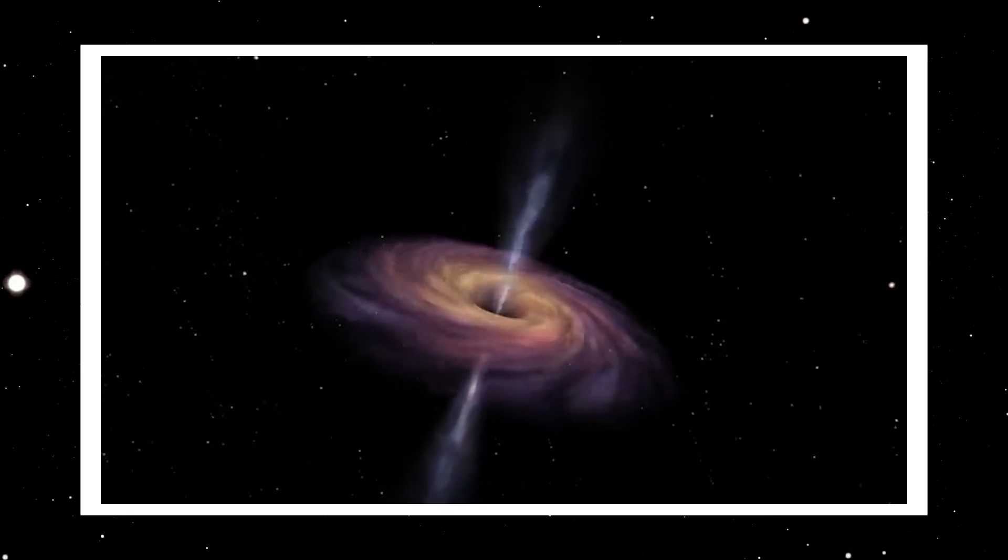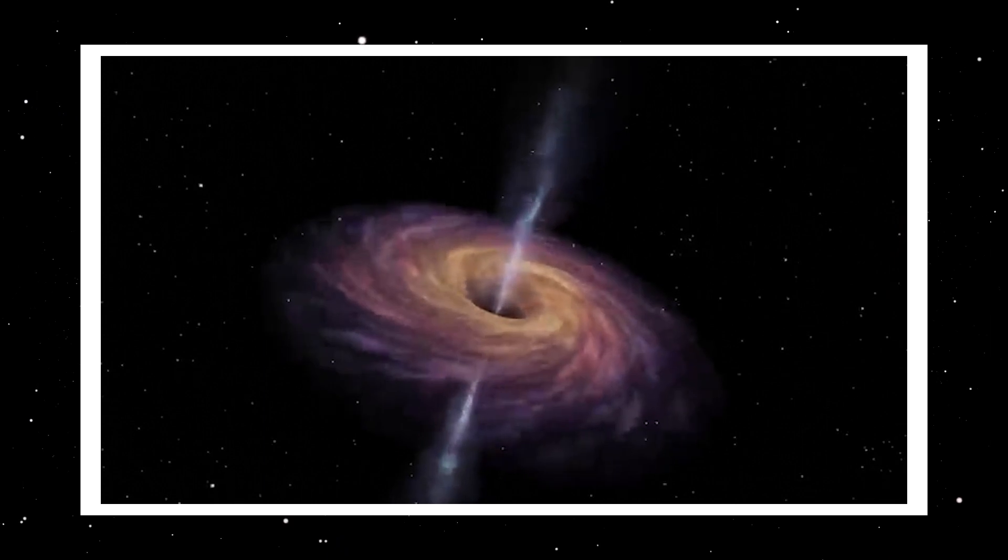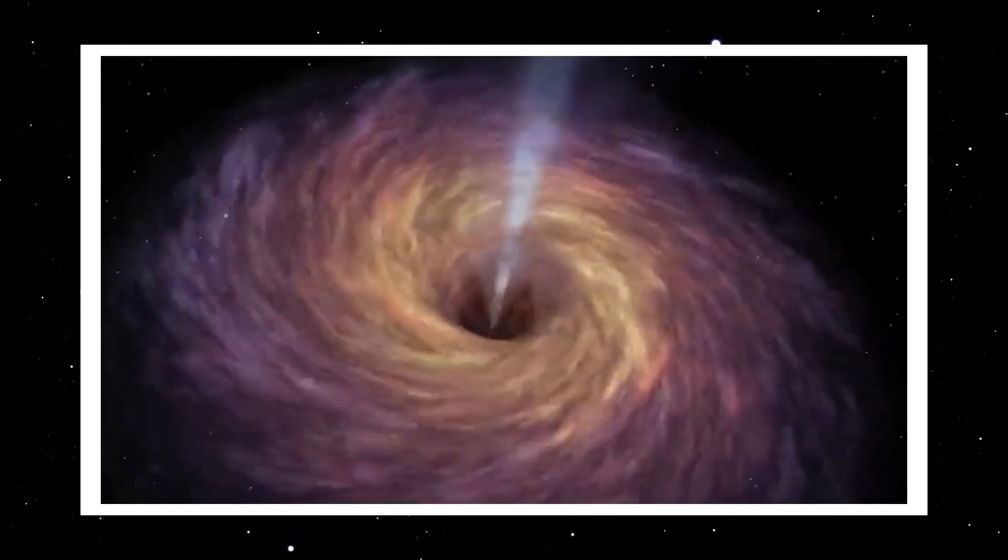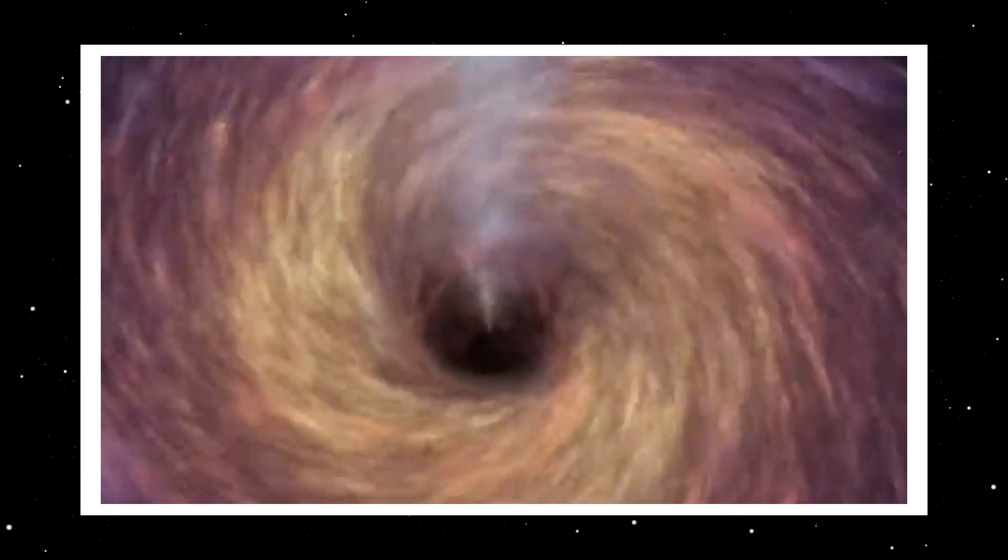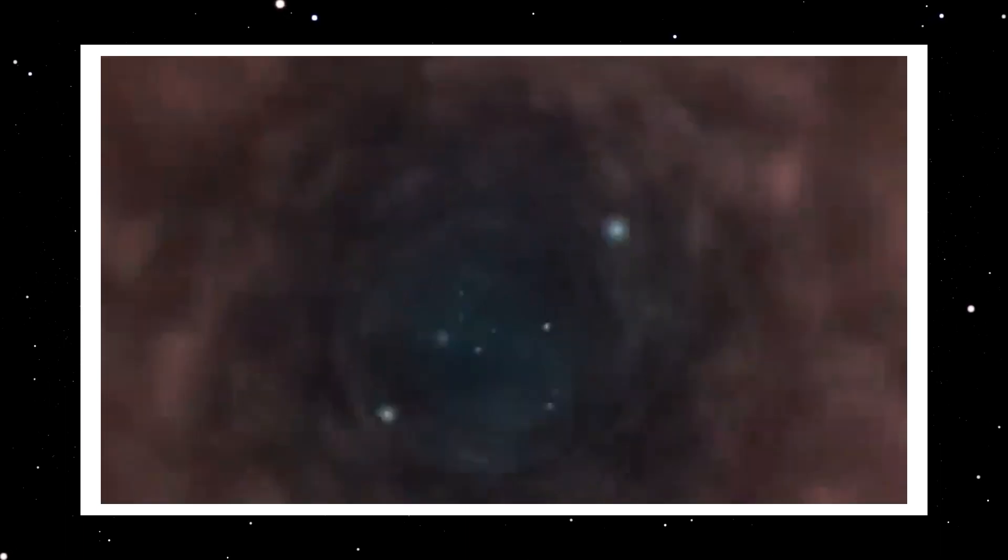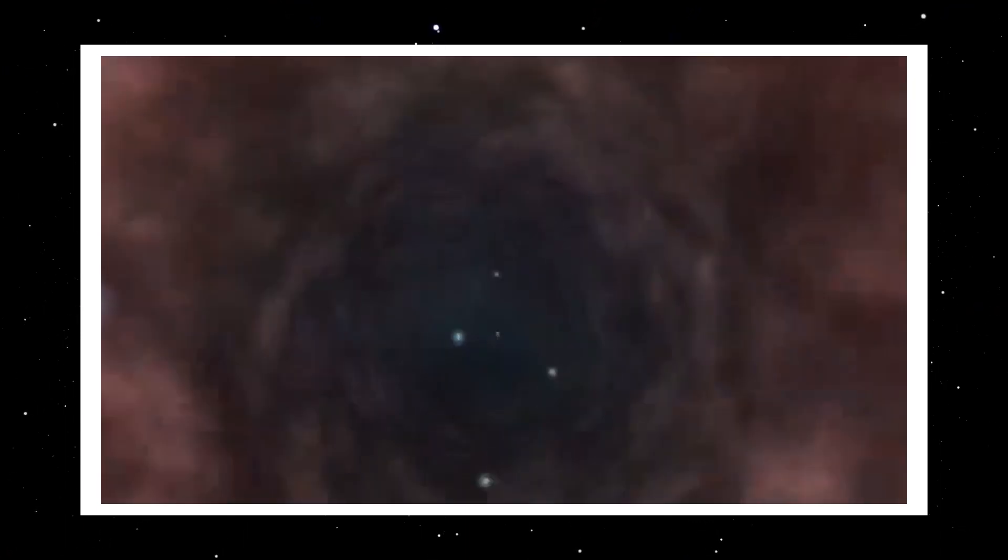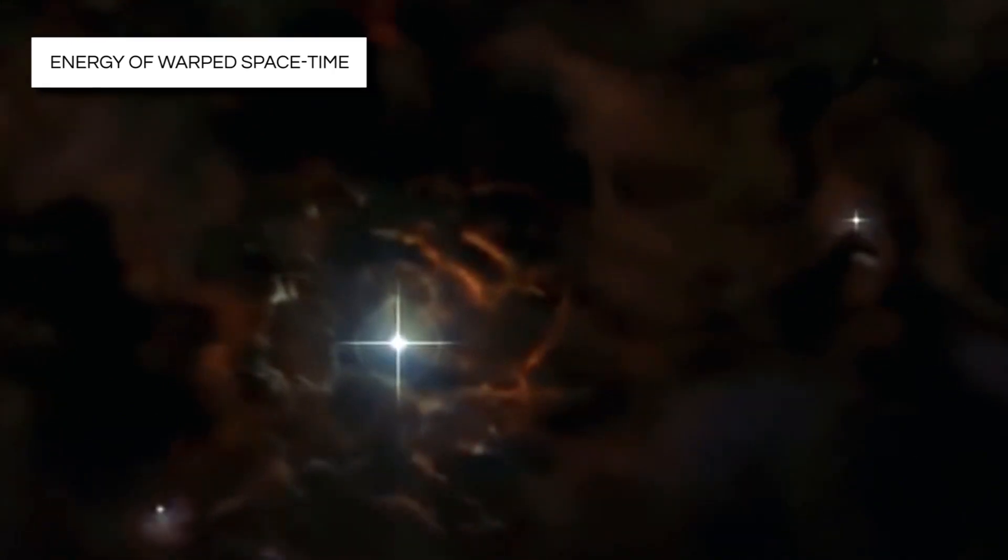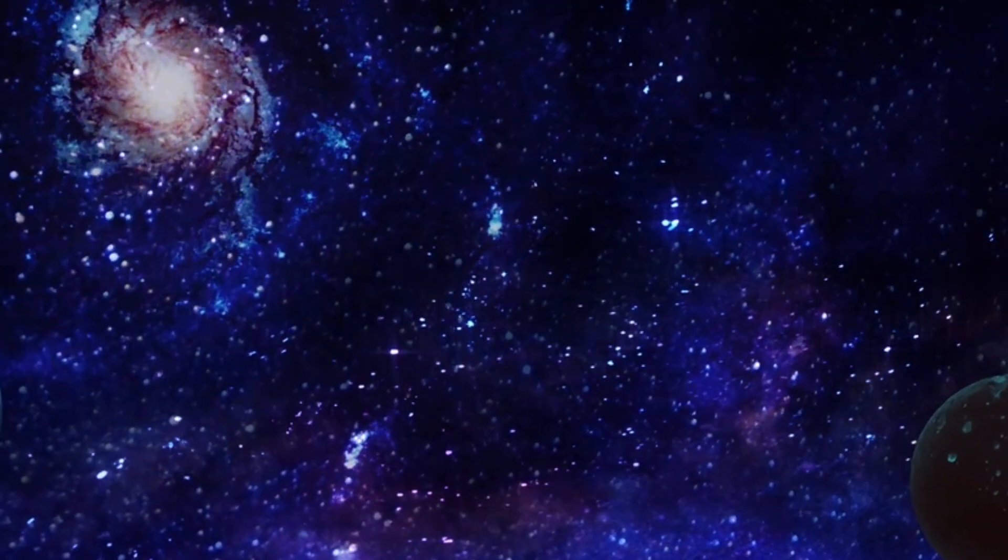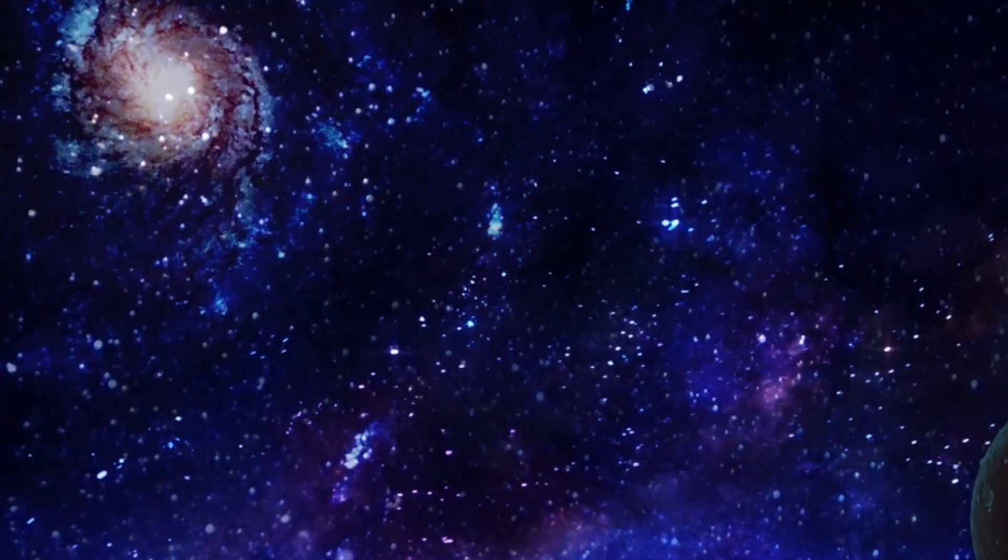Once formed, a black hole is a region of space and time that is both black and empty. It is black because light cannot escape its gravitational pull, but it is empty because the matter that created it has been completely destroyed. The matter's energy has transformed into the energy of warped spacetime, leaving behind a vast amount of energy that affects its environment in profound ways.